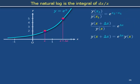Put the y on x back on the right and then expand e to the delta x as a power series: 1 plus delta x plus delta x squared over 2 factorial plus delta x cubed over 3 factorial and so forth.